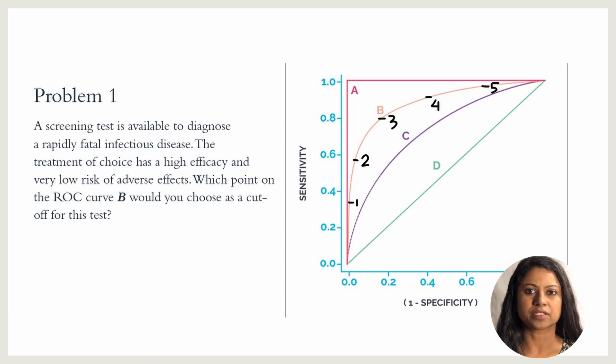Let's solve a few questions. A screening test is available to diagnose a rapidly fatal infectious disease. The treatment of choice is cost effective and has a very low risk of adverse effects. Which point on the ROC curve B would you choose as the cut-off point for this test?